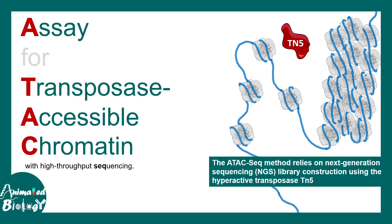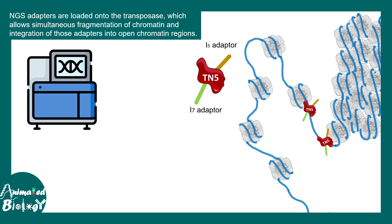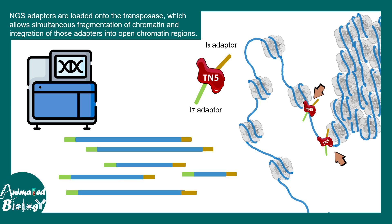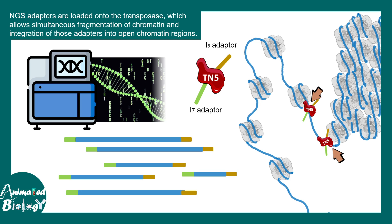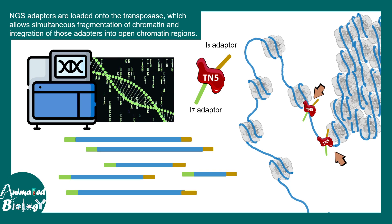ATAC-seq uses a highly active transposase known as Tn5 transposase, which is engineered with sequencing adapters like I5 or I7 adapters. Tn5 transposase will gain accessibility into the chromatin. If the chromatin is heterochromatinized, Tn5 would not get access and cannot do its job. But where a particular portion of chromatin is relatively accessible, Tn5 sits there, chops off the fragment, and attaches the sequencing adapters.